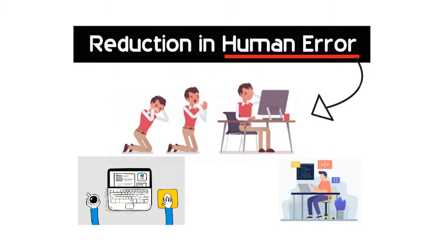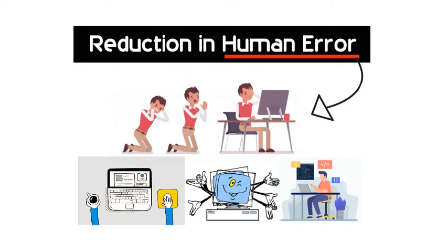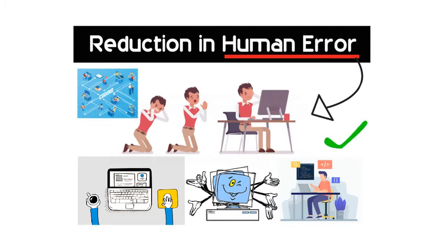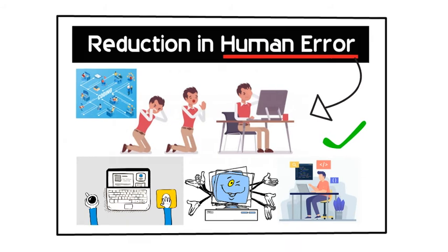With Artificial Intelligence, the decisions are taken from previously gathered information applying a certain set of algorithms. So errors are reduced and the chances of reaching accuracy with a greater degree of precision is a possibility.